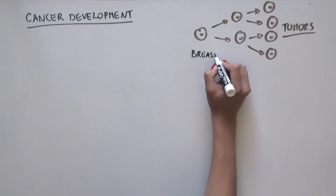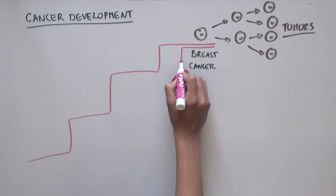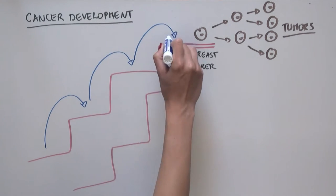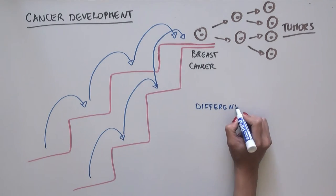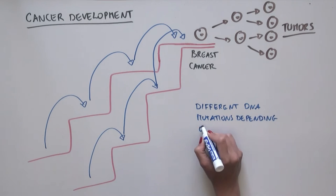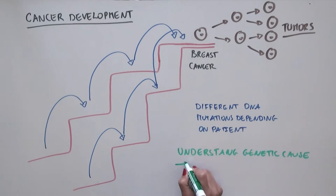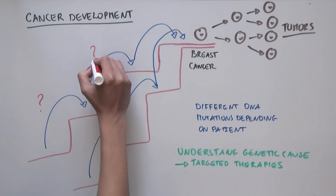Because one type of cancer, for example breast cancer, can take multiple paths and be caused by different DNA mutations, depending on the patient, it's very important for us to understand what is the underlying genetic cause in order to develop targeted therapies.